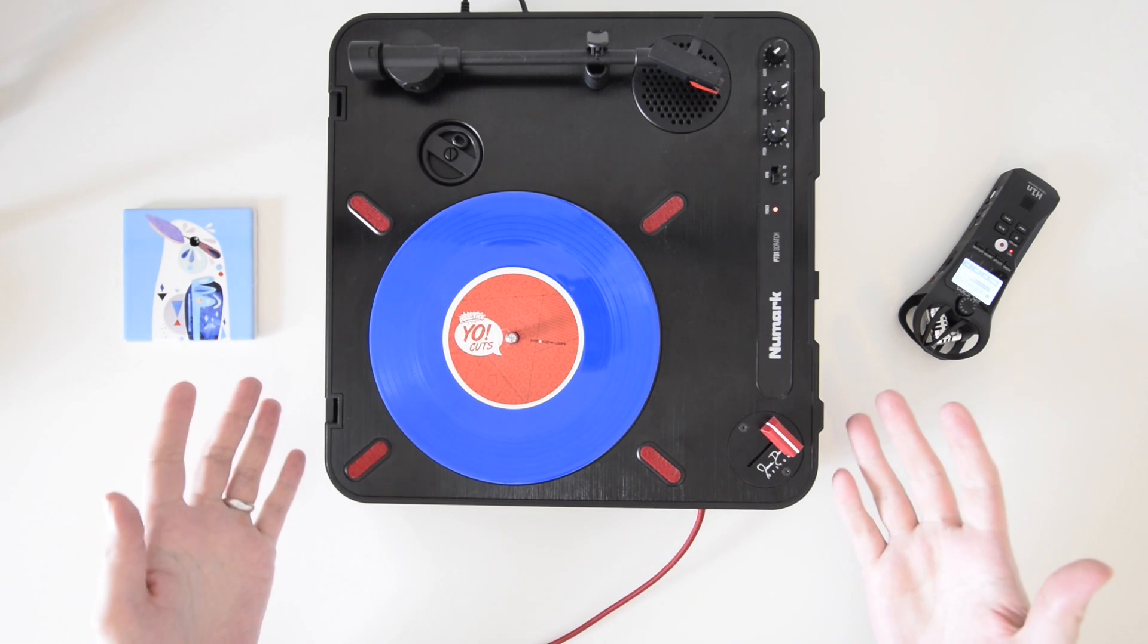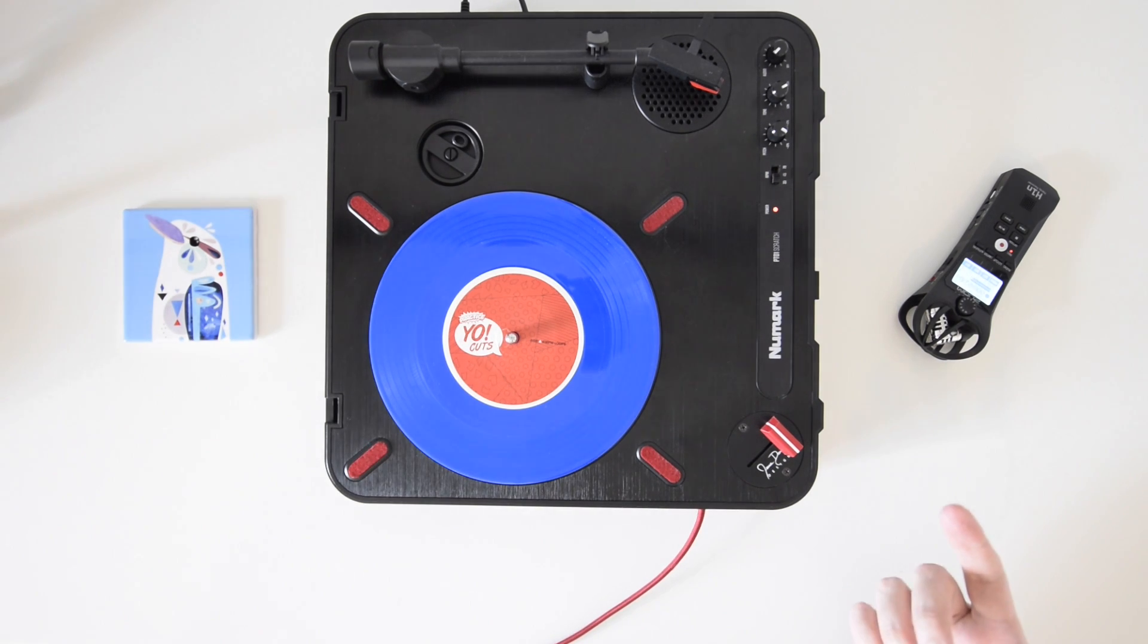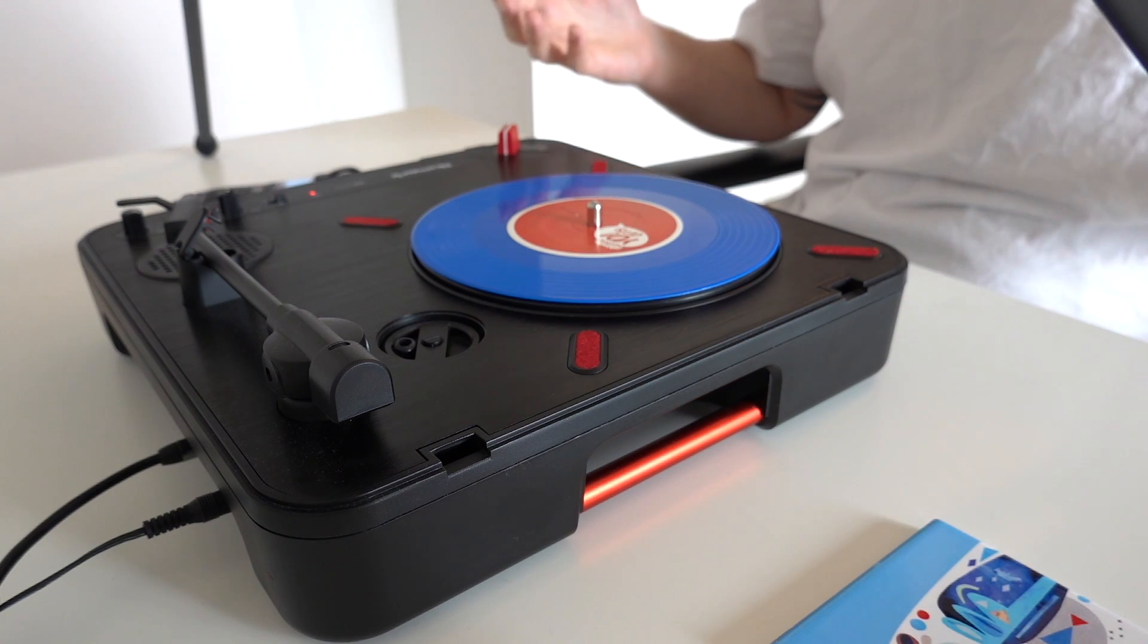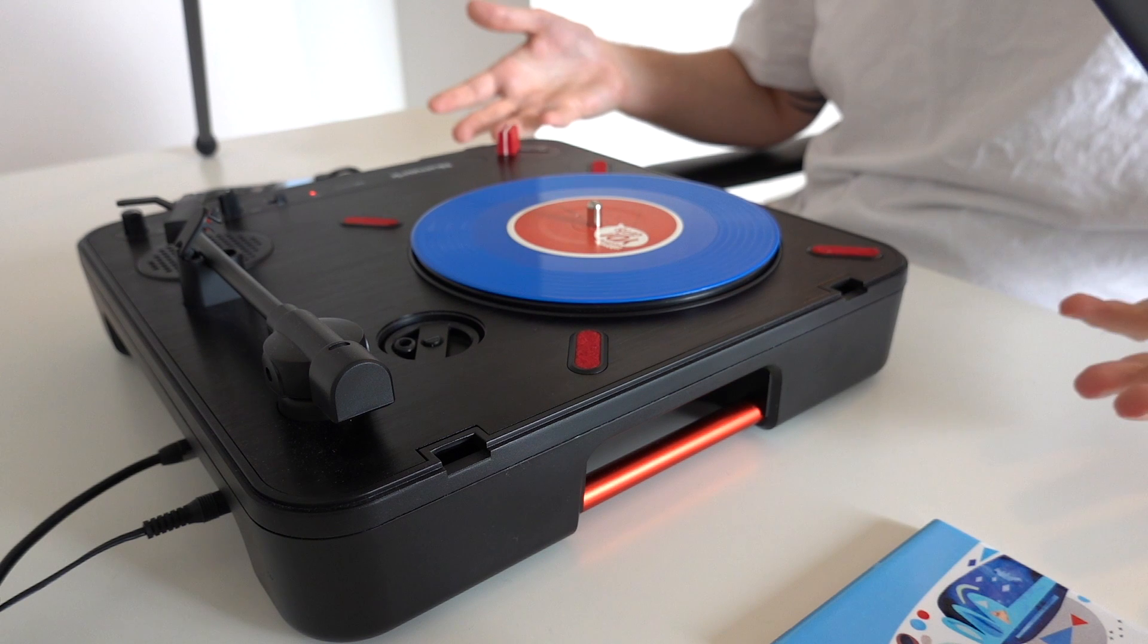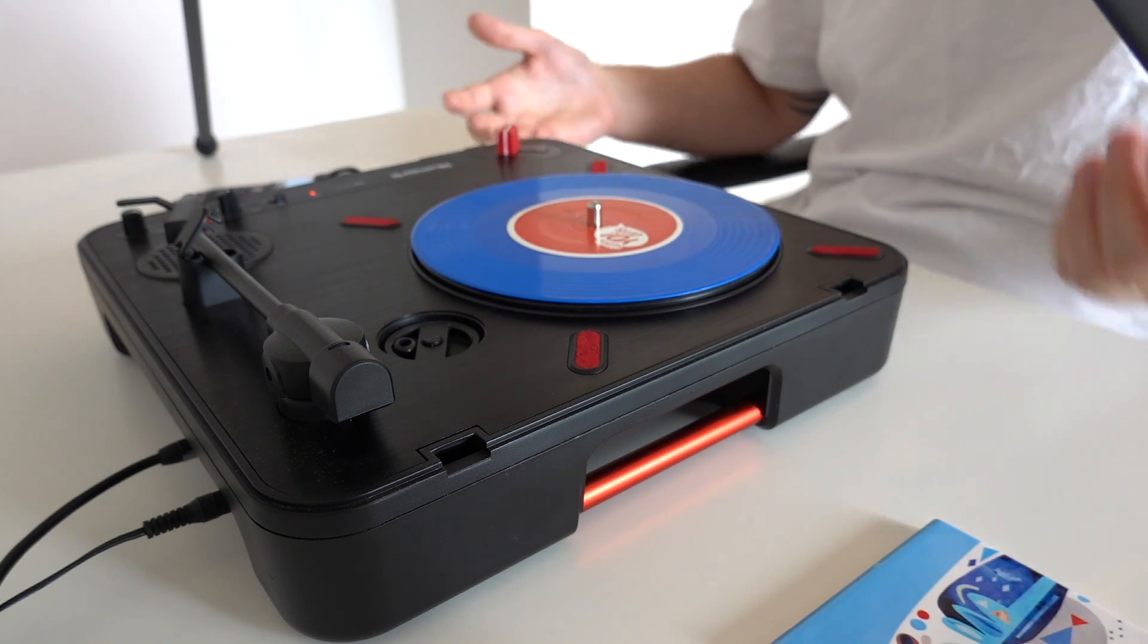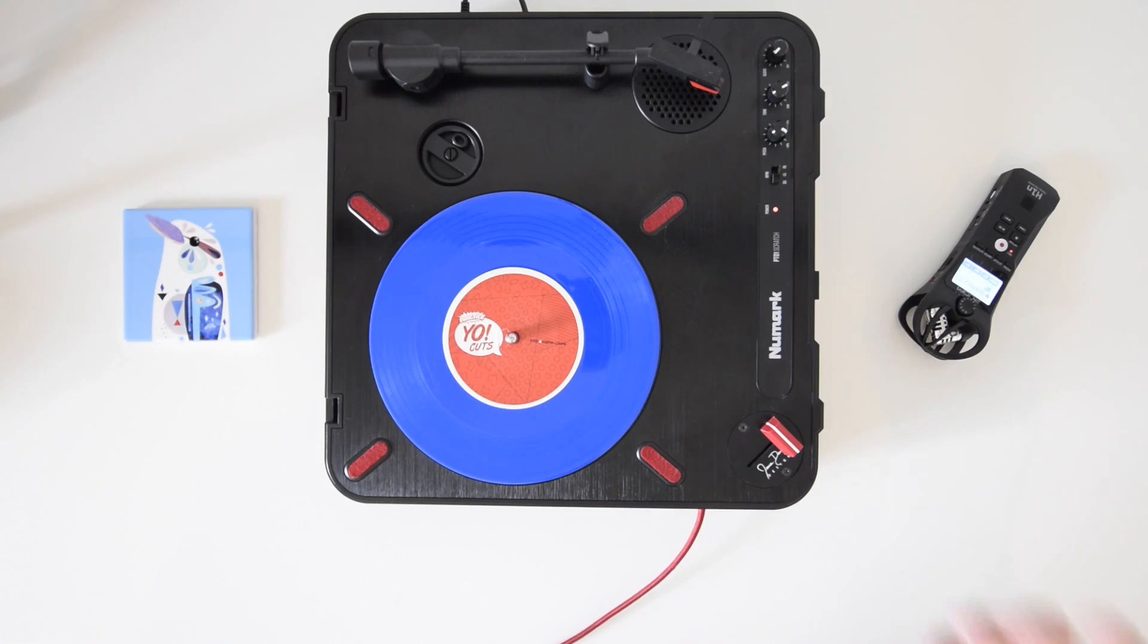Now this right here is the PT01 scratch. It's made by Numark and if I'm not mistaken it's the first all-in-one portablist setup. That means you can just grab this thing and straight out of the box you have a portablist setup. Now with that said there are a few mods that you would probably want to do in order to get the best you can out of this little thing.